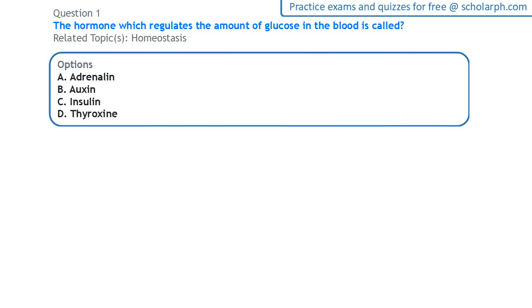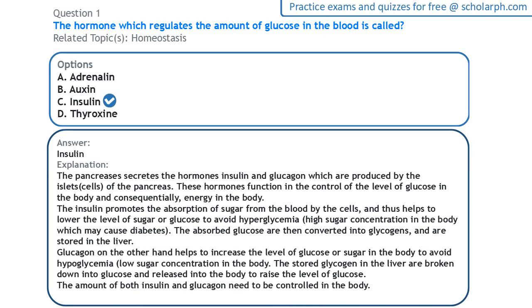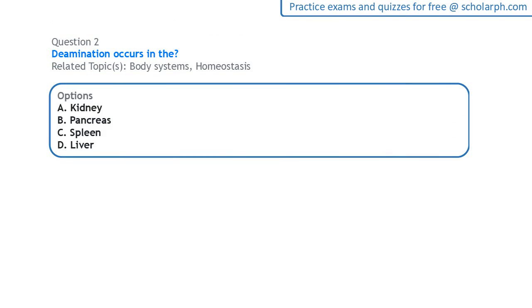First question: the hormone which regulates the amount of glucose in the blood is called insulin. Insulin is produced by the pancreas. The insulin and glucagon are two hormones produced by the pancreas that function in the control of glucose levels in the body. Glucagon helps to increase the level of glucose or sugar in the body, while insulin helps to lower the level of glucose.